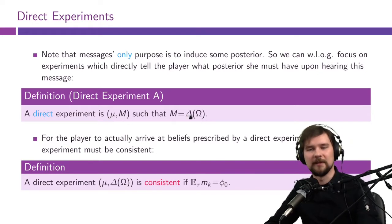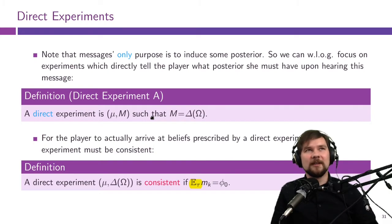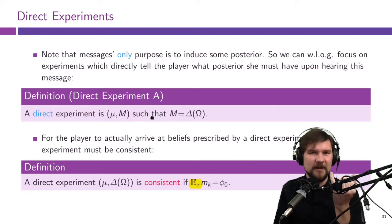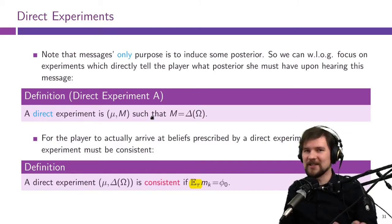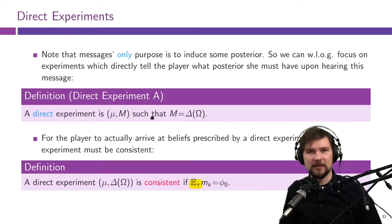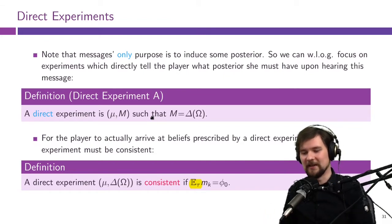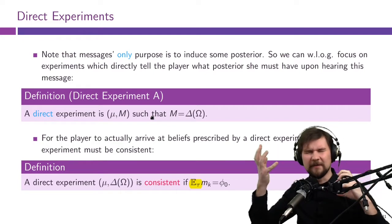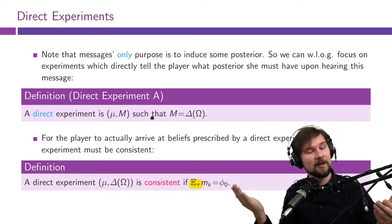In mechanism design, our direct mechanism told the players: you do not need to design this elaborate mapping from what you know to how you play, because any game you can play, the designer can play on your behalf. So if you just tell us your type, we can do everything in your best interest, as if you just played the game yourself. That means we could restrict ourselves to direct mechanisms in which all players report their own types. The similar logic here is: we do not really need you to make complicated inferences from messages.